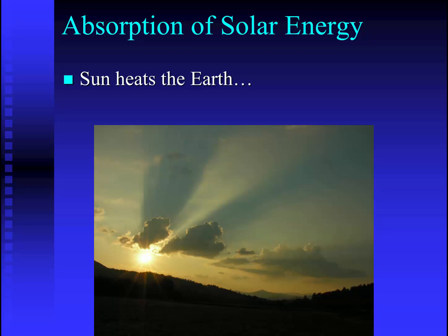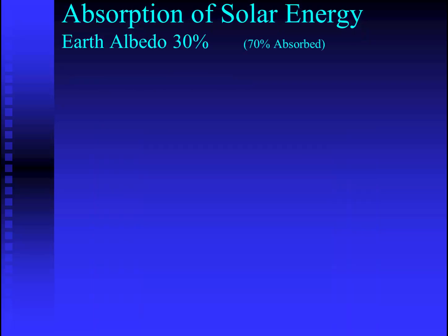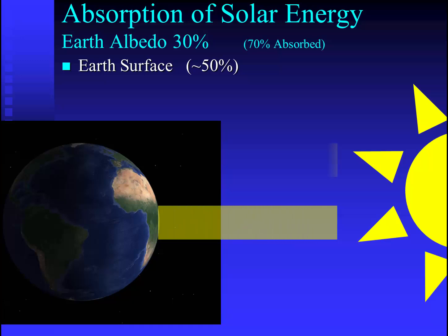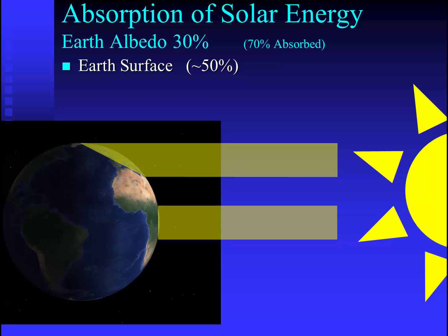The similar thing happens with the Earth. The sun heats the Earth through the process of radiation being absorbed by the land's surface. Let's talk about the albedo of the Earth: 30% of the light hitting the Earth is reflected off to space, and 70% is absorbed. Being more specific, of the 70% that's absorbed, 50% is absorbed by the surface of the Earth — the land and the ocean. The light hitting towards the equator will be far more concentrated and much more spread out at higher latitudes and poles. So, the time of day and latitude make a big difference in how much solar energy is absorbed.